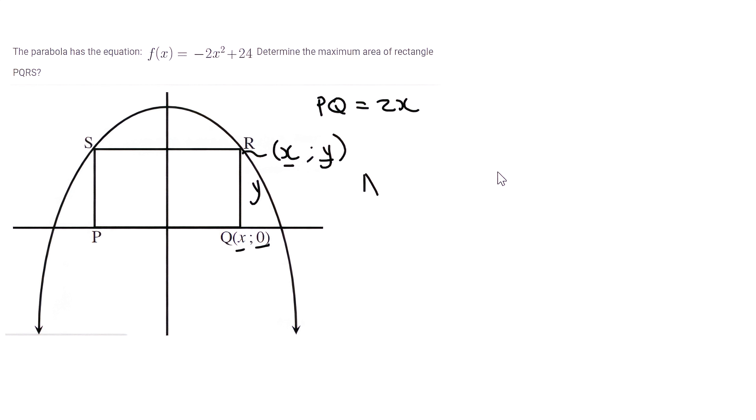So technically we could find a formula for the area of this rectangle now because we said that the length of PQ is 2x and the length of QR is y. But now the problem with this is that we have two variables. Now, when they give you an equation like this, it says y is equal to that. That is for the parabola, which means that you can use that equation for any point on this parabola.